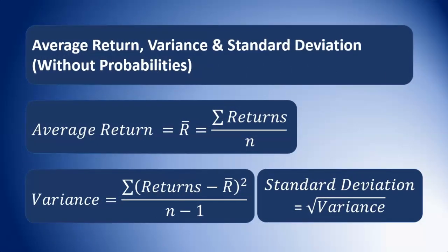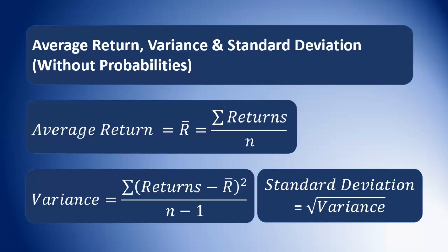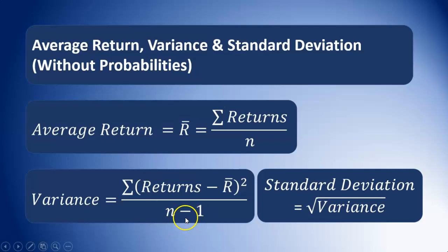Without probabilities, the average return is just the total of the returns divided by the number of returns we're looking at. For the variance, the definition is the average squared deviation from the mean. From each return, we subtract the average return, square the results, total all of those results, and divide by n minus 1, where n is the number of returns. After we find our variance, the standard deviation is just the square root of the variance.